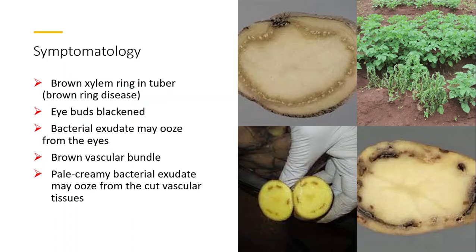What are the symptoms of this disease? A brown xylem ring in tubers can be seen. This disease is also called brown ring disease. Here you can see the brown ring in the xylem of the tuber.